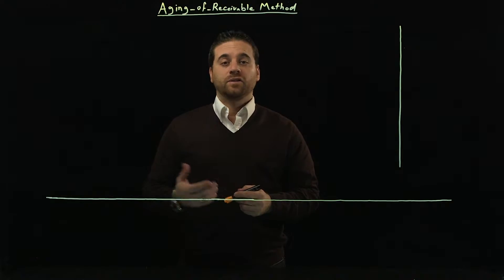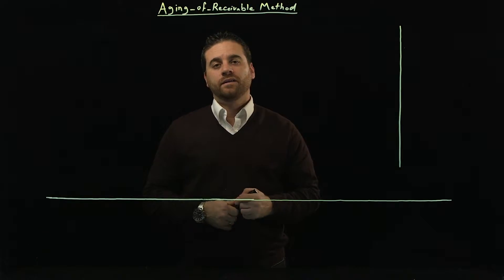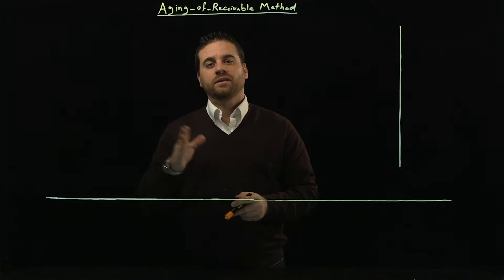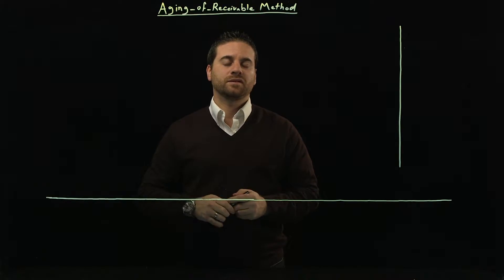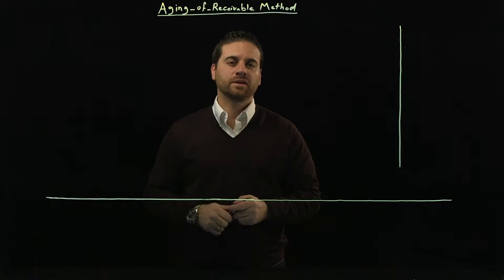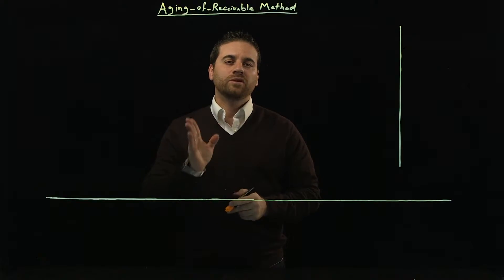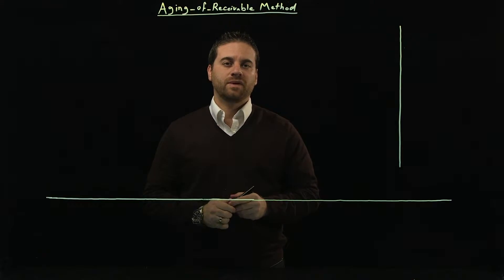It's called the aging method, or aging of receivables method. The difference between this one and the percentage of receivables method is we're going to be more specific with this method of calculation.